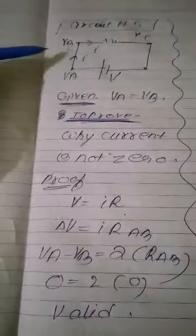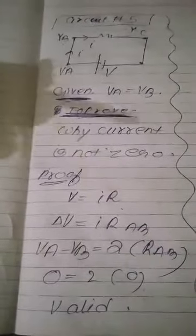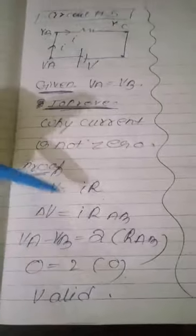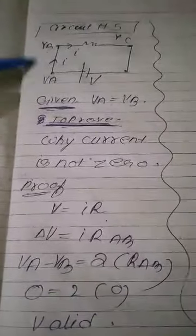What is delta V? It is higher potential minus lower potential. But since it has been given that VA is equal to VB, so it is zero, but current is not zero. Current suppose it is 2 ampere, but the resistance of this wire is zero.